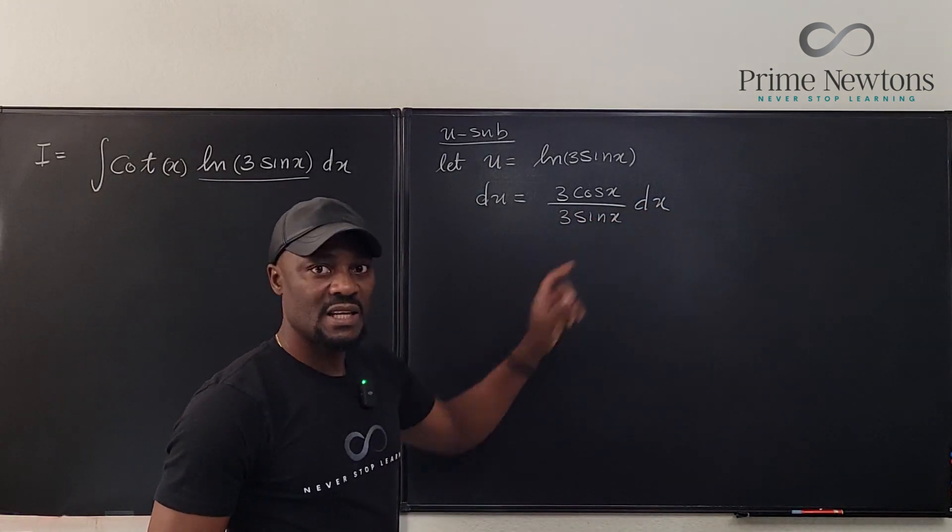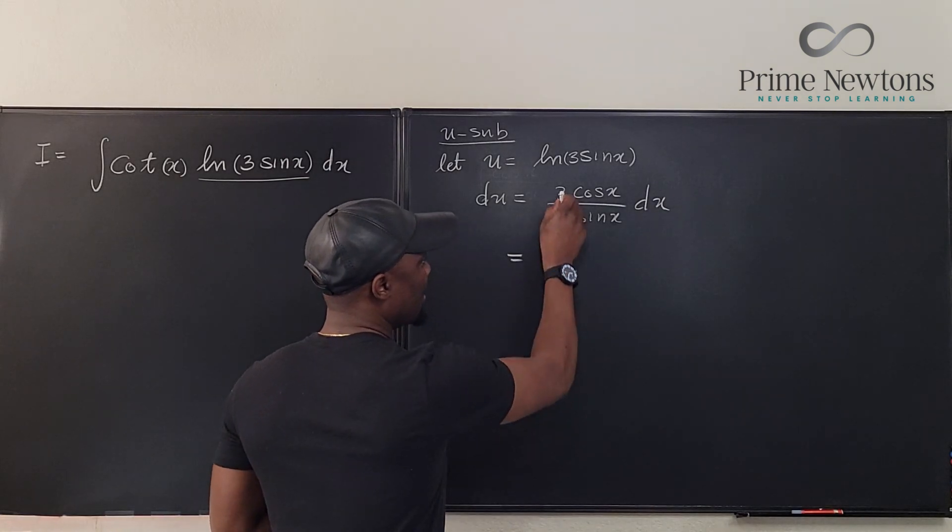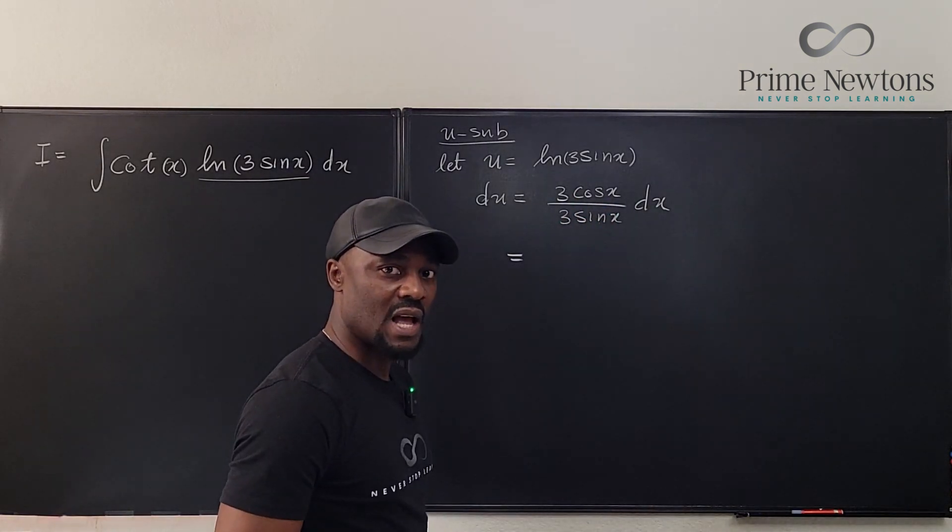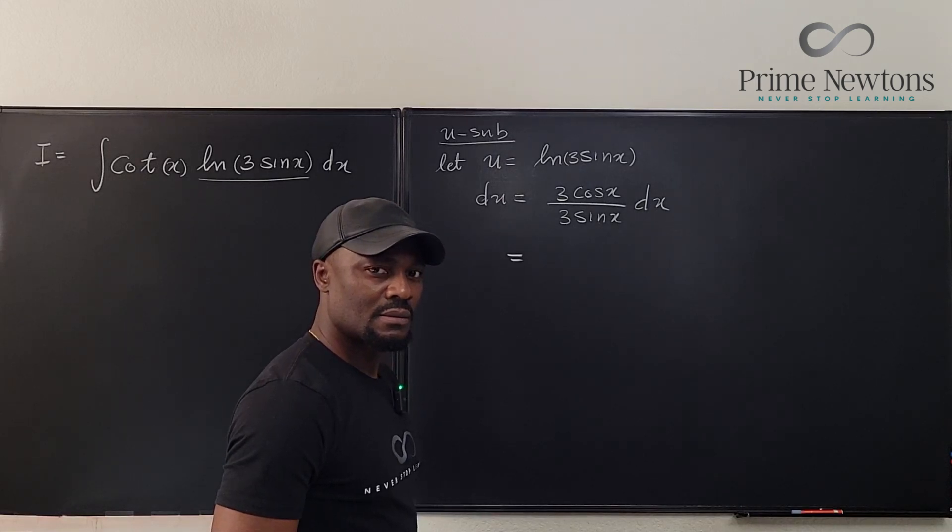What do we get here? This is the same thing—this 3 cancels this 3. This is cosine x over sine x. What is that? That's cotangent x.